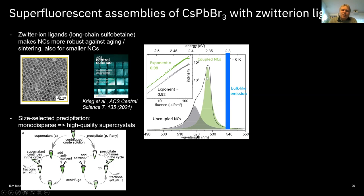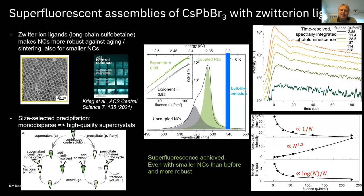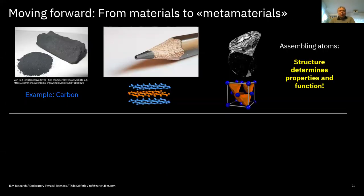Separating uncoupled and coupled quantum dot peaks, and excluding bulk-like emission, confirms these are still individual dots. They still show the same superfluorescence signature as before: when increasing intensity in the time domain, the emission becomes continuously faster, develops ringing, and shows the expected dependencies for superfluorescence. This was demonstrated with what I just showed — the simple nanosuperlattices inheriting the cubic symmetry of individual nanocrystals.